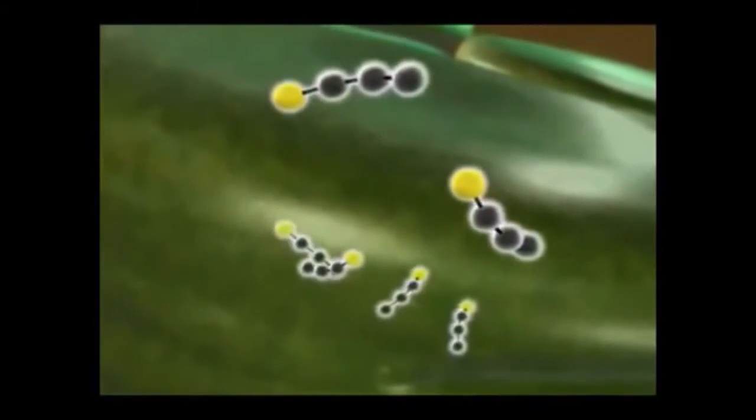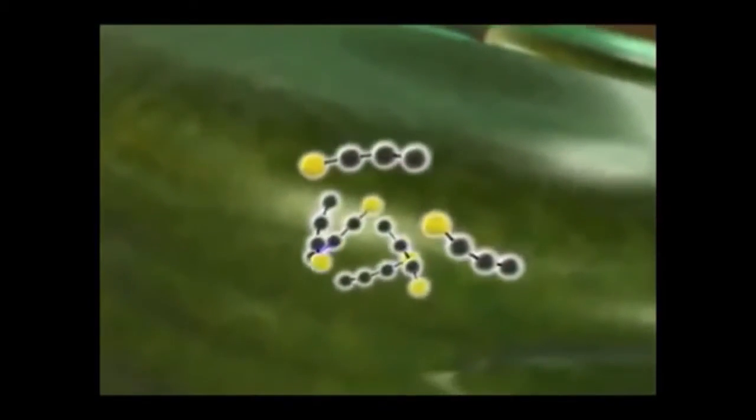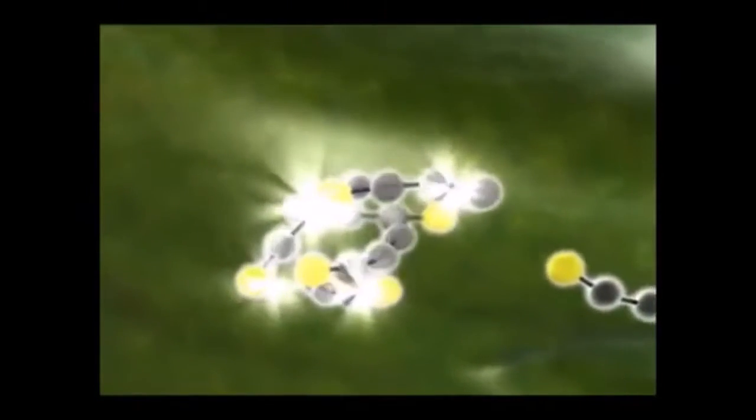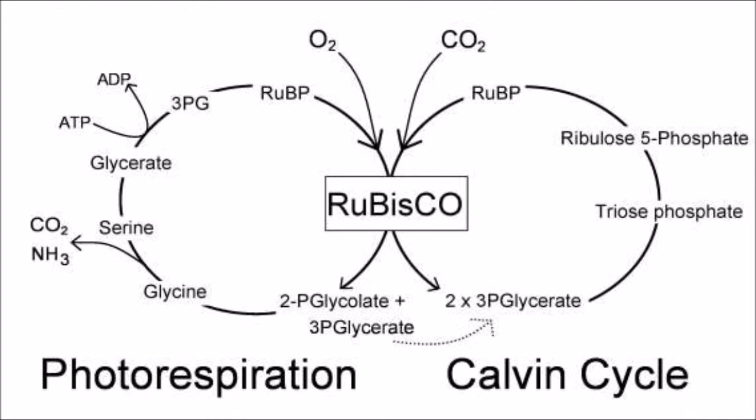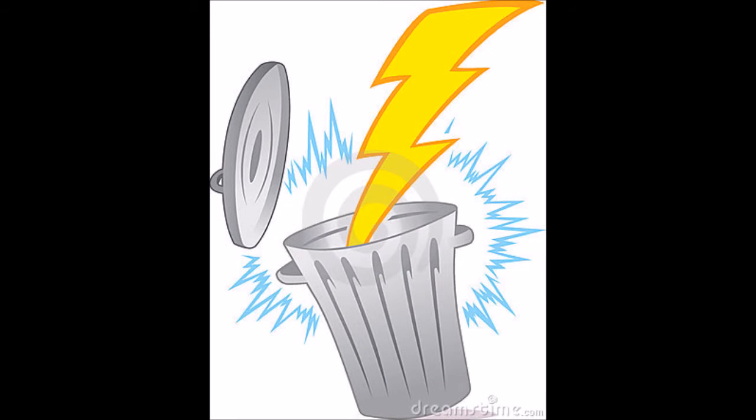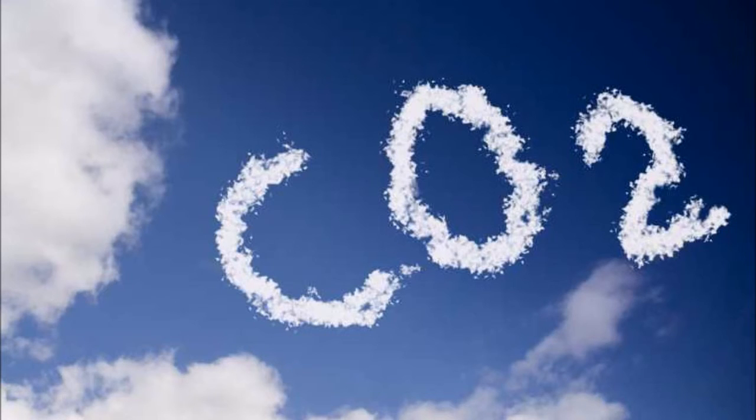Most of the G3Ps are rearranged back into RUBPs that will begin the Calvin Cycle again. For every six triose phosphates formed, only one leaves the Calvin Cycle. Photorespiration occurs when oxygen is brought in by Rubisco to oxygenate RUBP. When this occurs, the energy created in the first step of photosynthesis is wasted. Oxygen must be released so it pairs with carbon and is released as carbon dioxide.